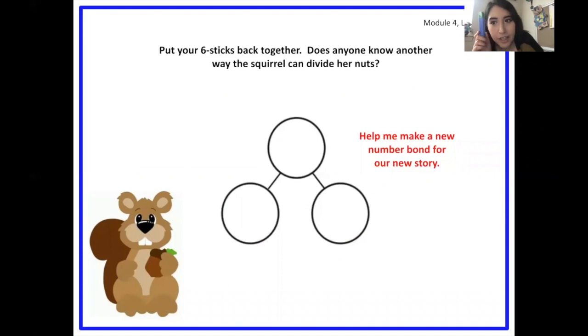Have another way that our squirrel could store the nuts. So we already did one and five, two and four. So what's another way? Three and three. If I break my six stick in half I get three and three. Very nice. So these are our parts and when we put them together it's the whole. Very nice.